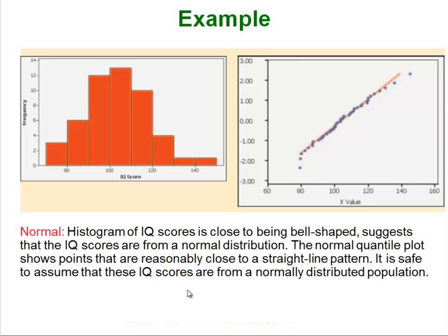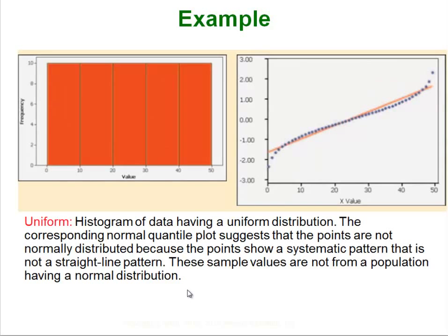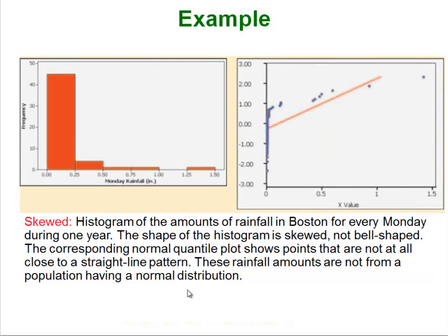Let's look at some examples. Here is a histogram on the left that looks fairly normal — might be a little bit skewed to the right. The normal quantile plot shows the dots fairly close to the line with no real pattern. Next, a uniform distribution: we know it is obviously not normal, and you can see the points all line up close to the line but with a very distinct pattern — it almost looks like a propeller. A severely skewed set of data will have a normal quantile plot where you get a lot of dots stacking up on each other along the axis.